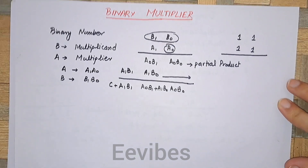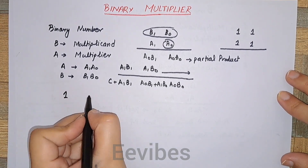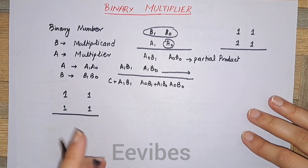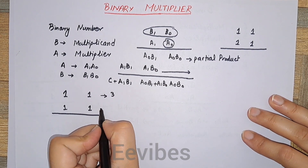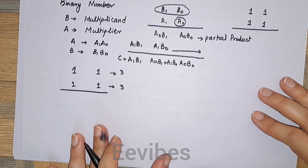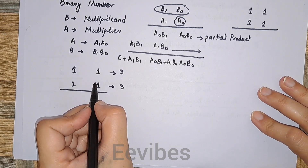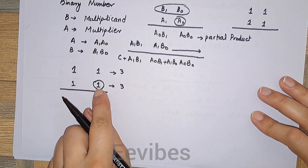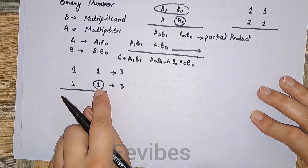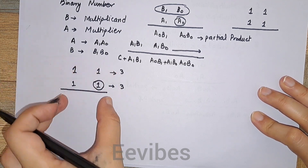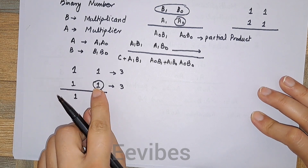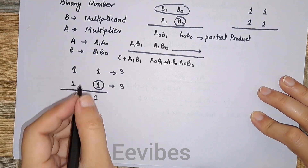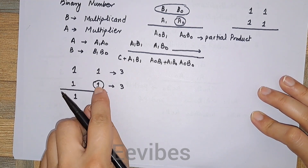To understand this concept, we take two numbers A and B with their maximum values. In two bits we can represent decimal 3, which is the maximum possible value. We multiply each bit of the multiplier with each bit of the multiplicand. Whenever the multiplier bit is equal to one, the multiplicand comes as it is; if it is equal to zero, we have zero in place of the multiplicand.